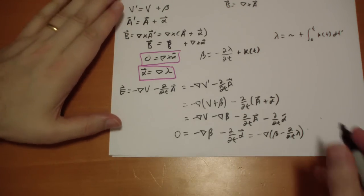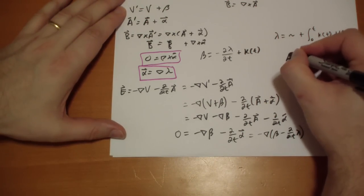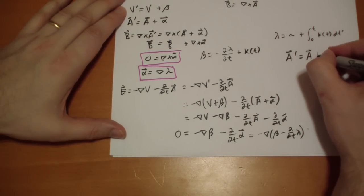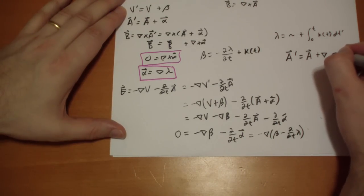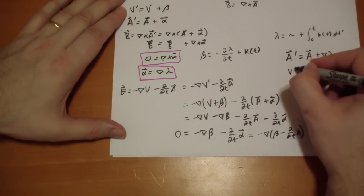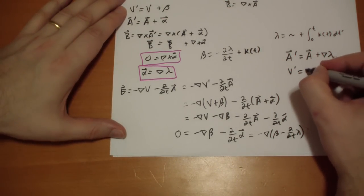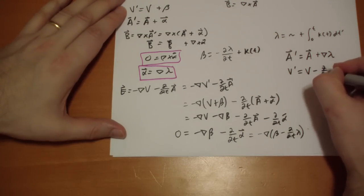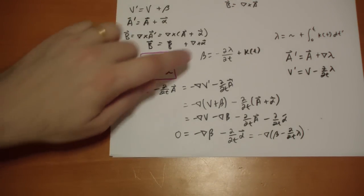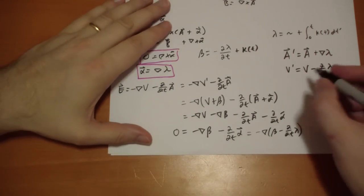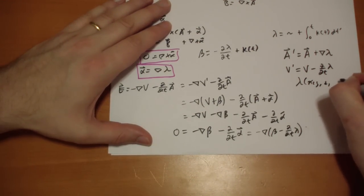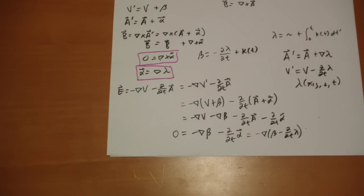So in the end, we say that our A prime can be anything that works plus the gradient of lambda. Our V prime can be anything that works minus the time derivative of lambda, whatever lambda you choose. So beta has to be negative the time derivative of lambda. And lambda can be a function of x, y, z, and t. And that's fine. It'll still work.